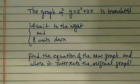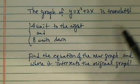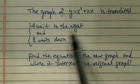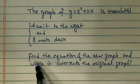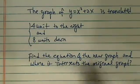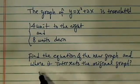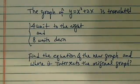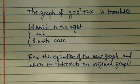We have a pretty complicated question here. The graph of the quadratic equation y = x² + 2x is translated 4 units to the right and 8 units down. We're supposed to find the equation of the new graph and where it intersects the original graph, which means we have to solve the two equations by setting them equal to each other. Let's get started.